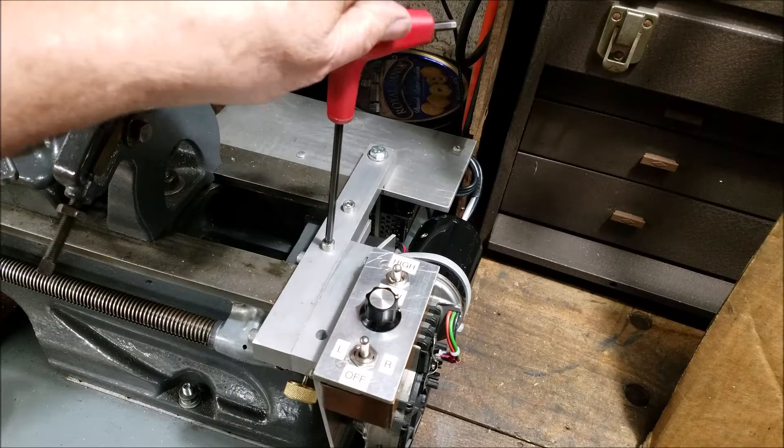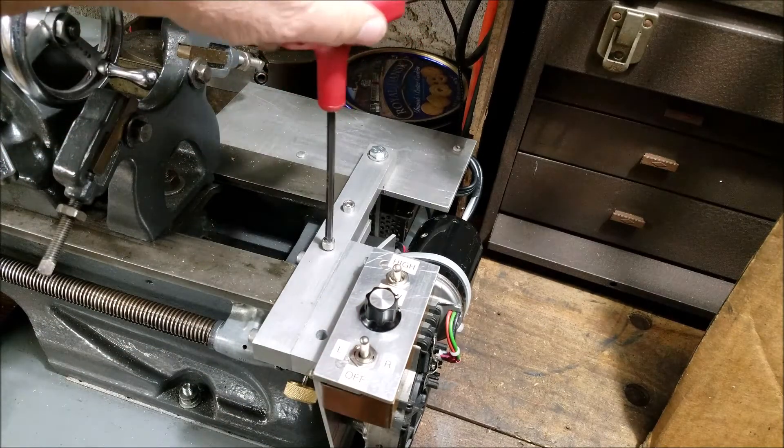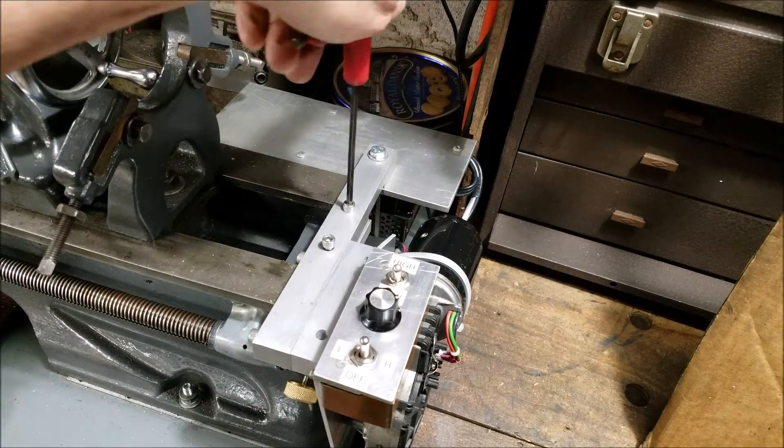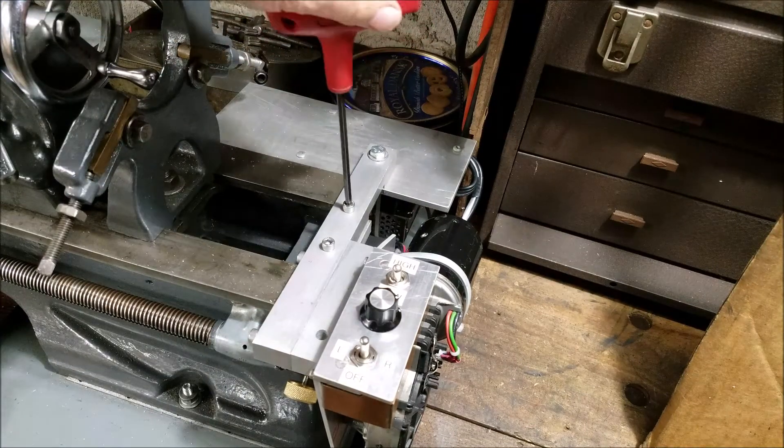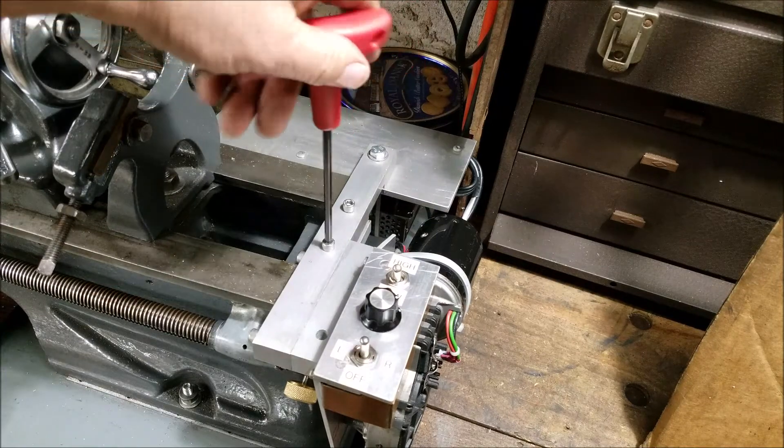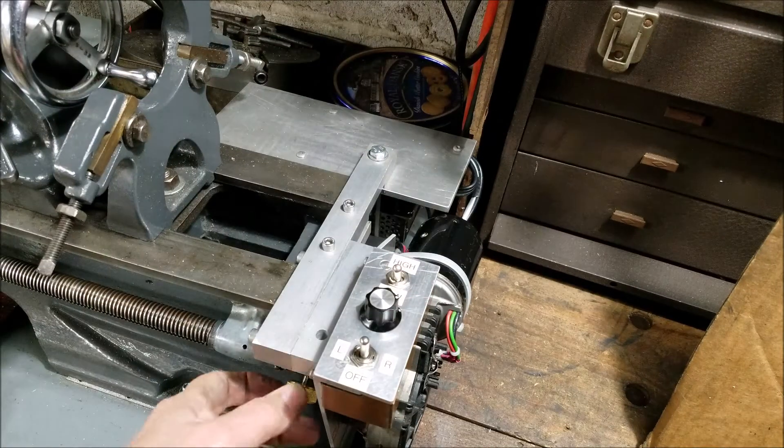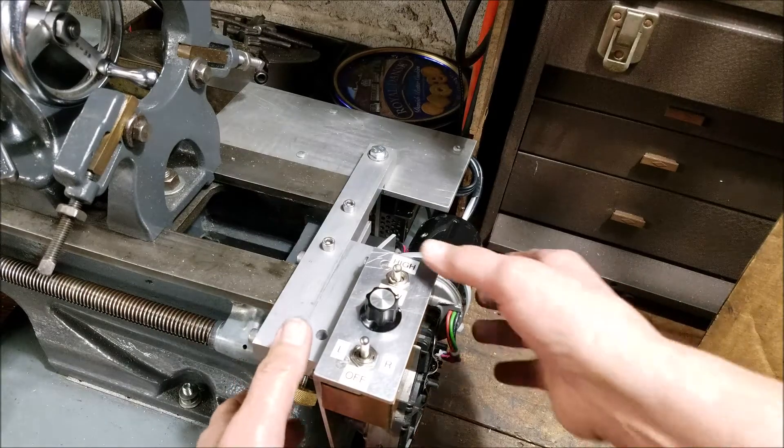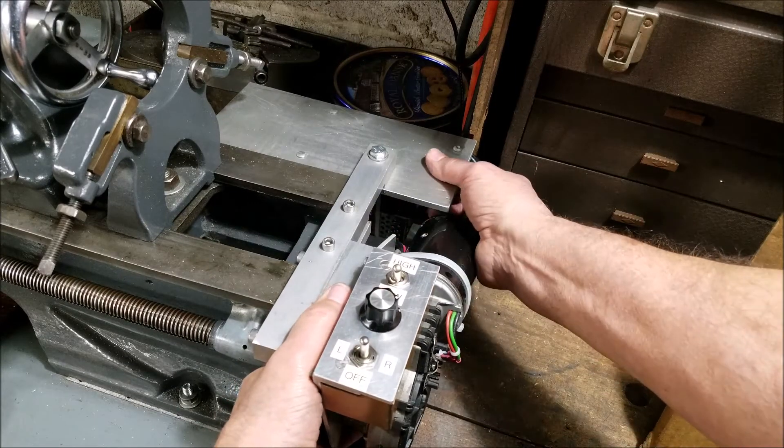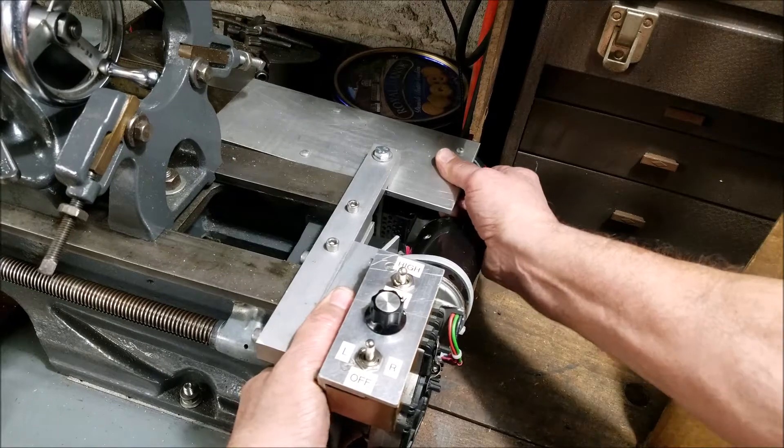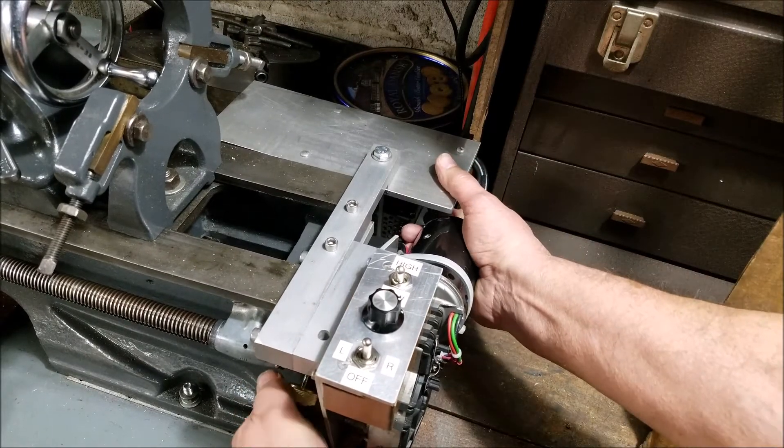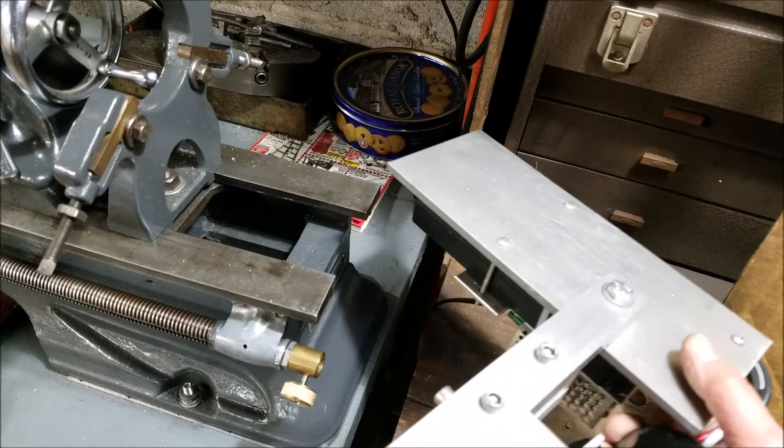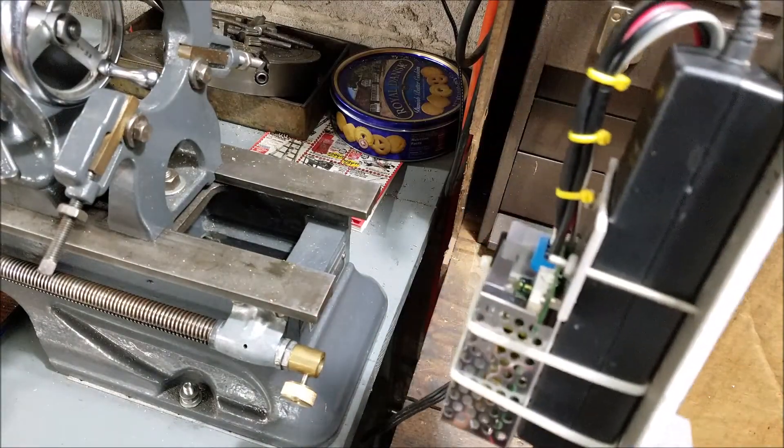First I'm going to unlock this locking screw, then this one, then this knob down here on the drive wheel. Then the whole unit just slides off just like that. Let's take it over to the bench.